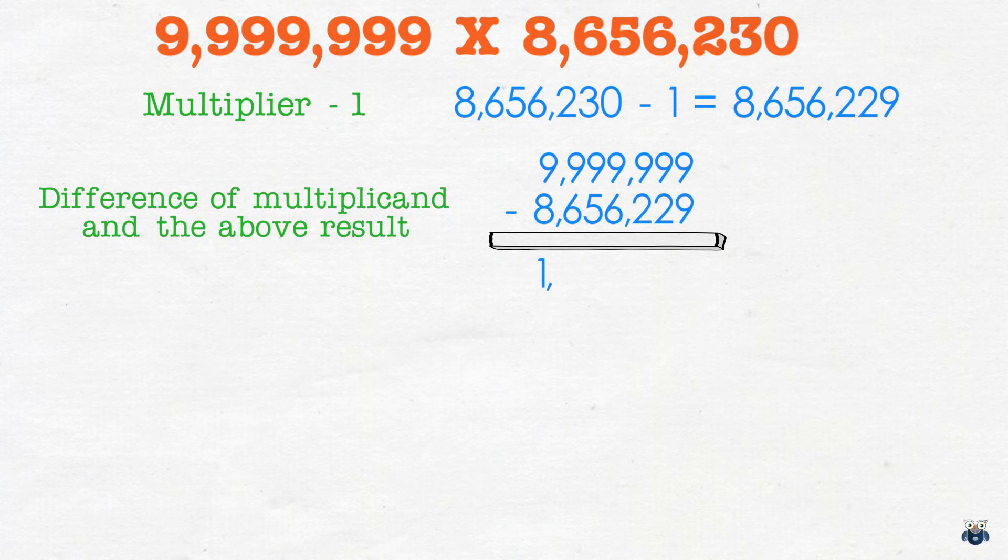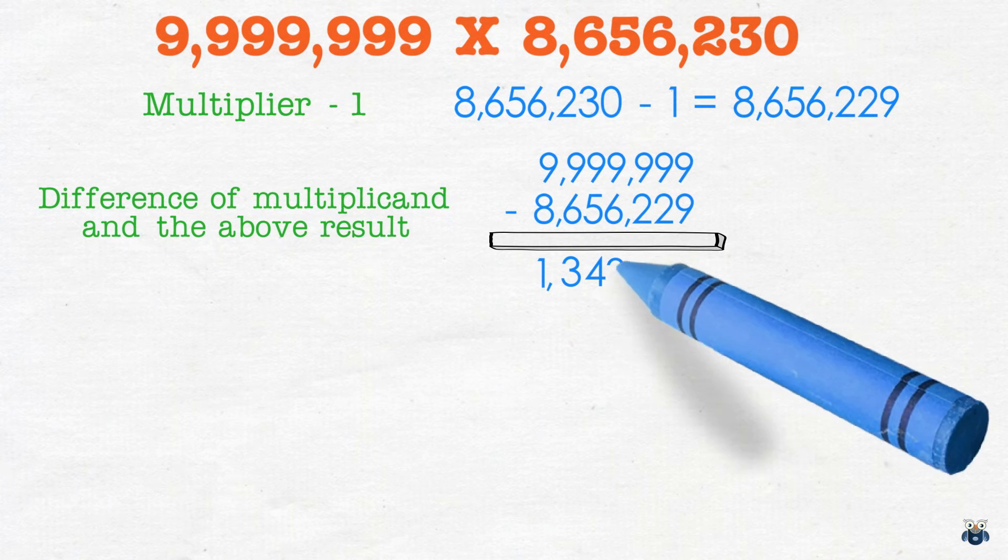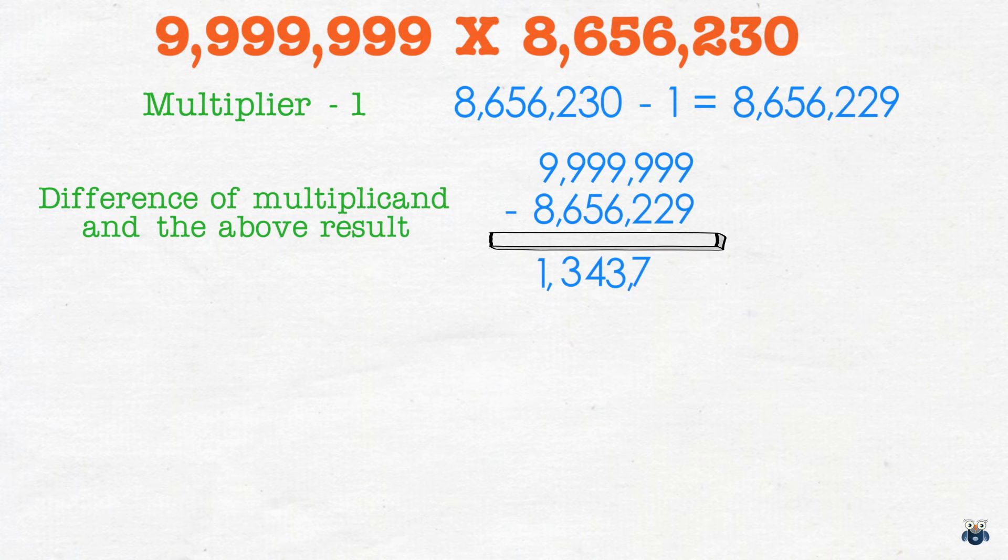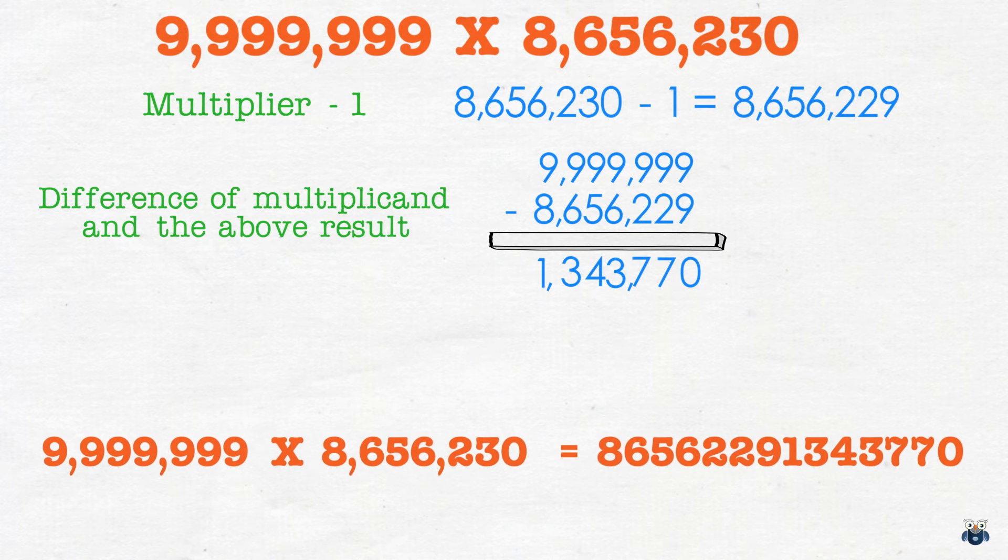9 minus 8 is 1, 9 minus 6 is 3, 9 minus 5 is 4, 9 minus 6 is 3, 9 minus 2 is 7, 9 minus 2 is 7 again and 9 minus 9 is 0. The second part of the answer is 1,343,770.